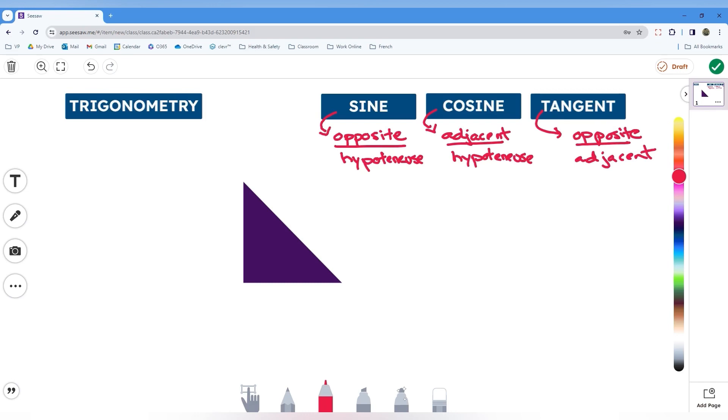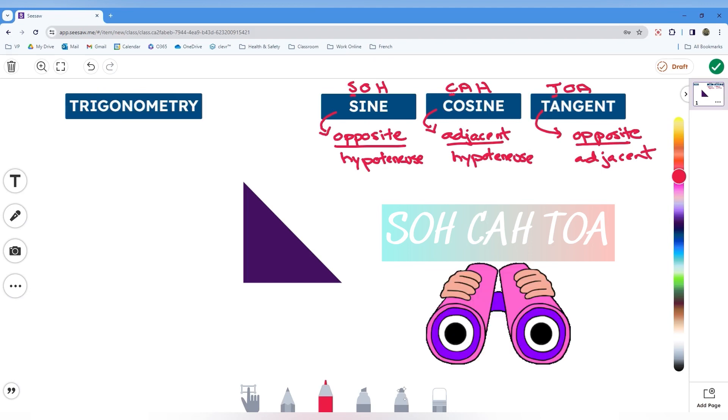I like to remember this as SOHCAHTOA. So that if you can remember that each of these first letters stands for your trig ratio - sine, cosine, and tangent - it will help you identify which sides we're actually looking at. SOH is opposite over hypotenuse, CAH adjacent over hypotenuse, and TOA opposite over adjacent.